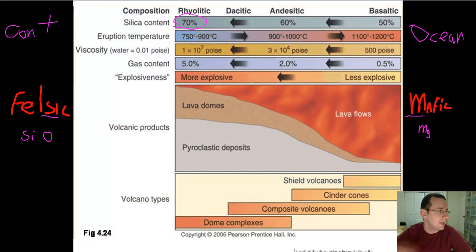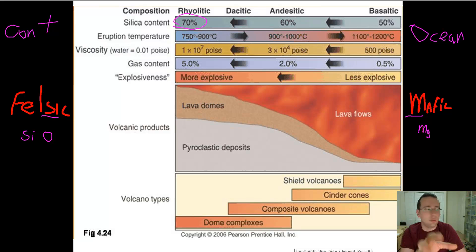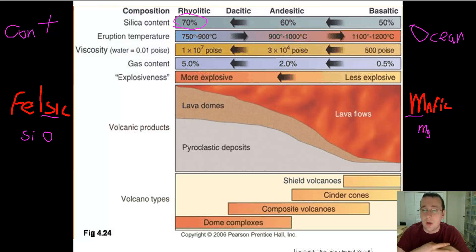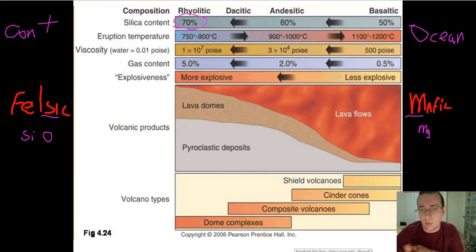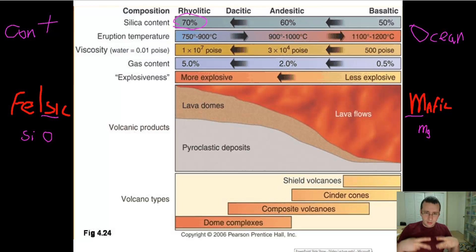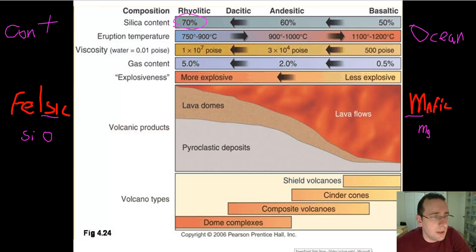Sometimes we refer to mafic eruptions as basaltic eruptions, and felsic eruptions as rhyolite or granite eruptions. In addition to temperature, because felsic lava is colder, it is going to crystallize more. It's also stickier, meaning it's going to be more viscous than mafic eruptions. Mafic eruptions are more fluid-like — the lava is a little hotter and more liquid-like. In between them, you're going to have some intermediate lava as well.